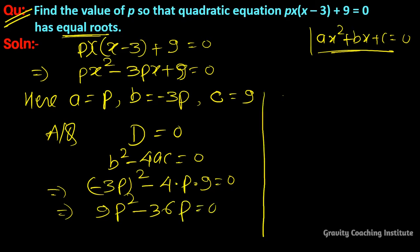This equals 9p(p-4) = 0, so p = 0 or p = 4.